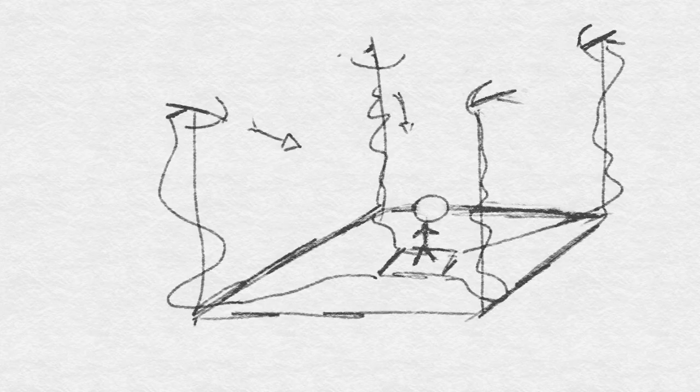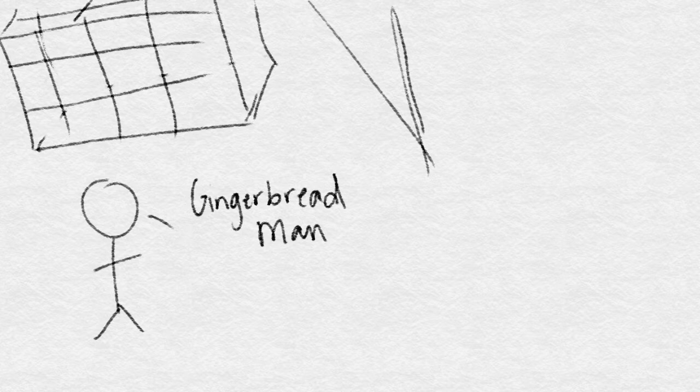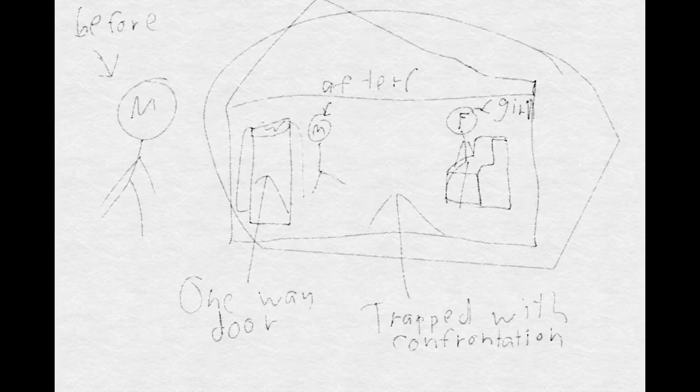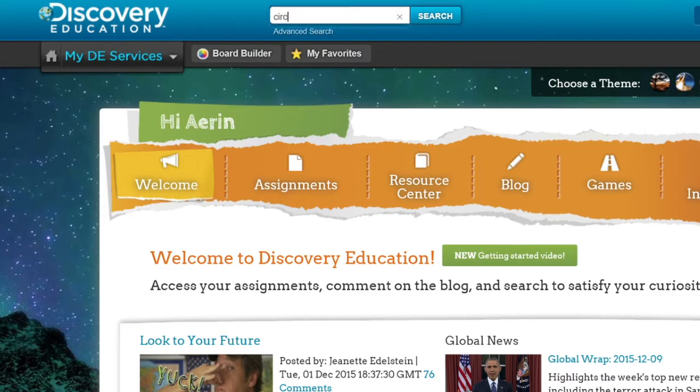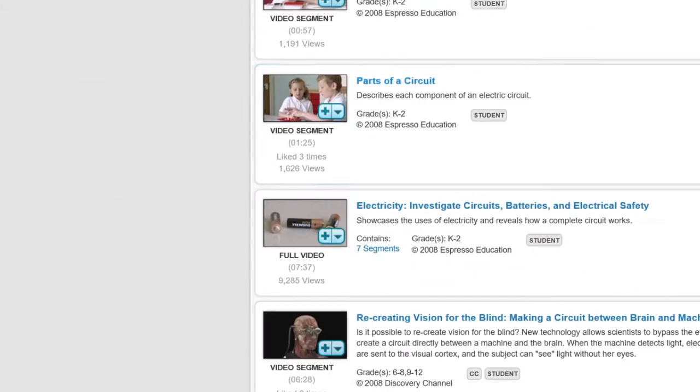Our team had many ideas. These included dropping a cage onto the gingerbread man or luring him into a house that would trap him. We researched different types of traps on Discovery and using other sources.